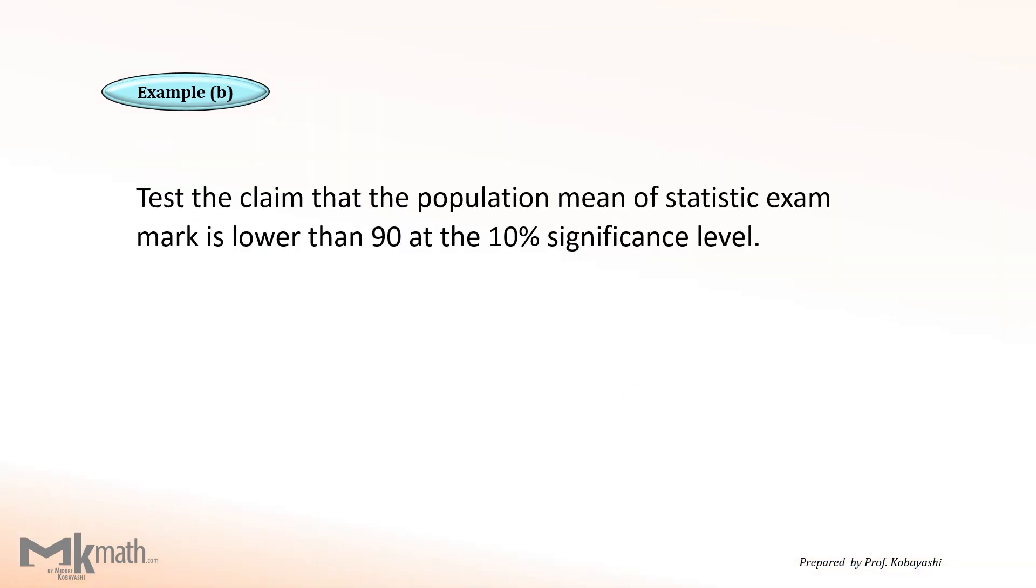Just assume this is another example question. The keyword of lower indicates one-tailed test. The null and alternative statement should be like this.